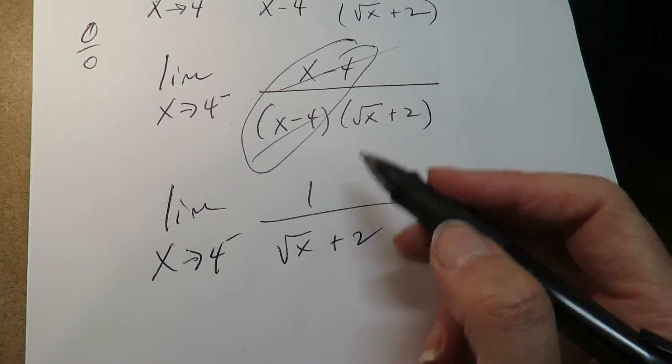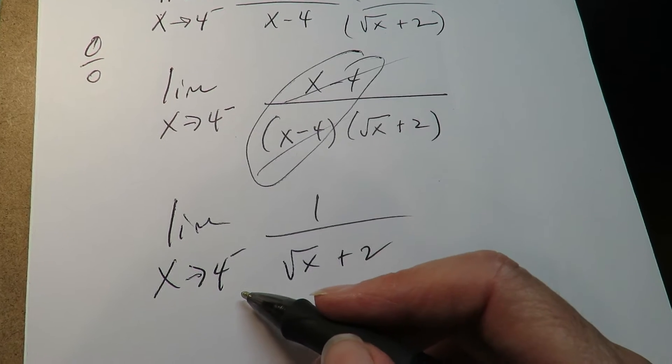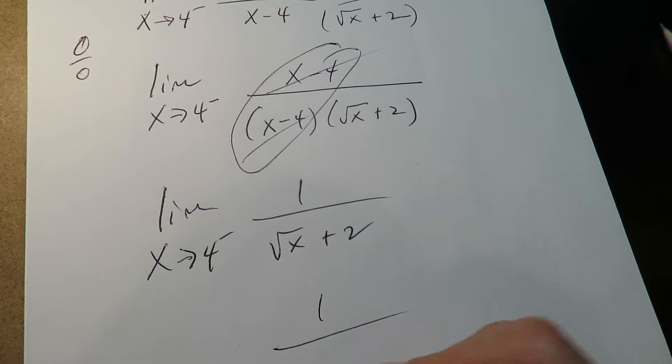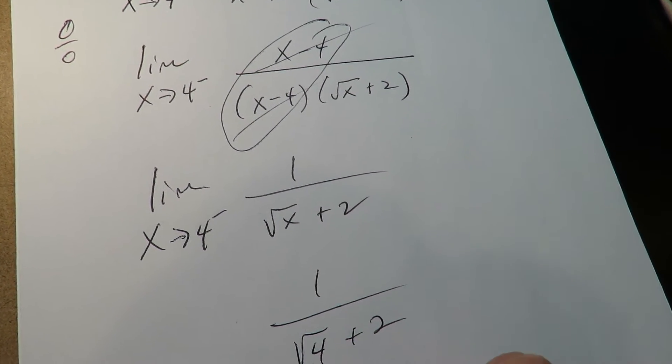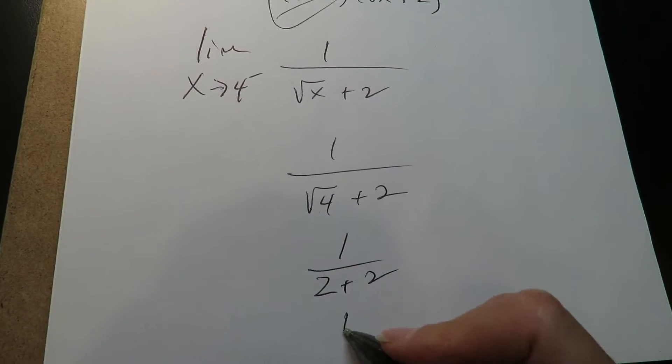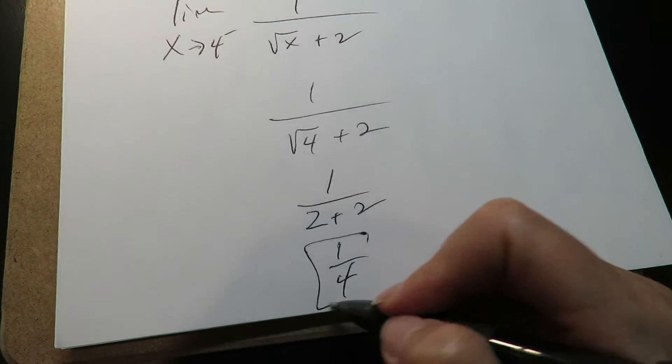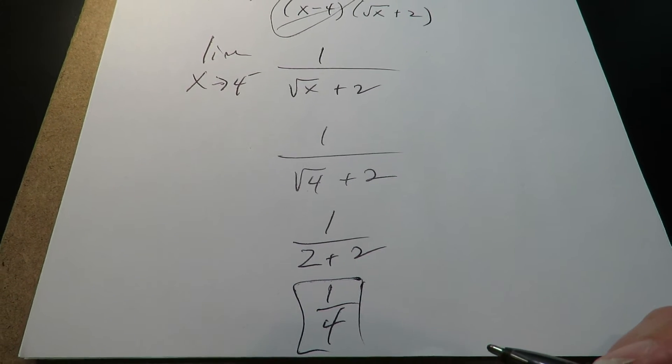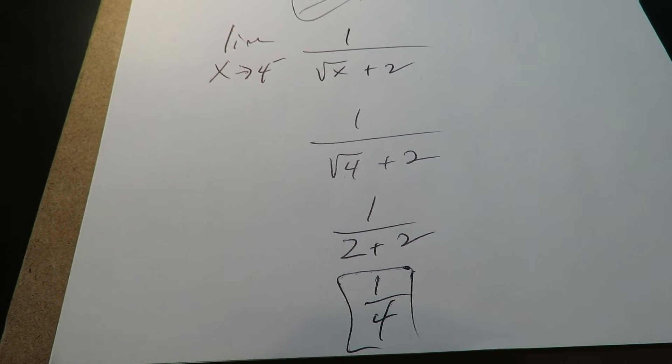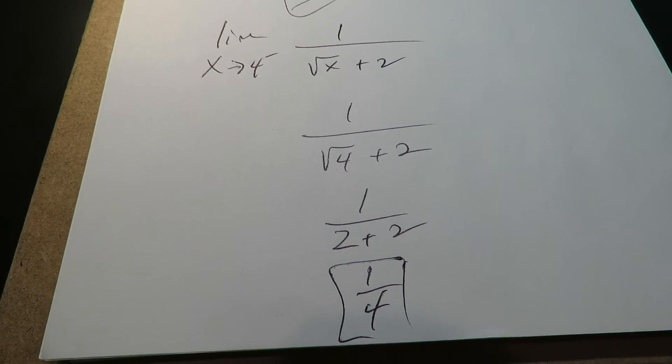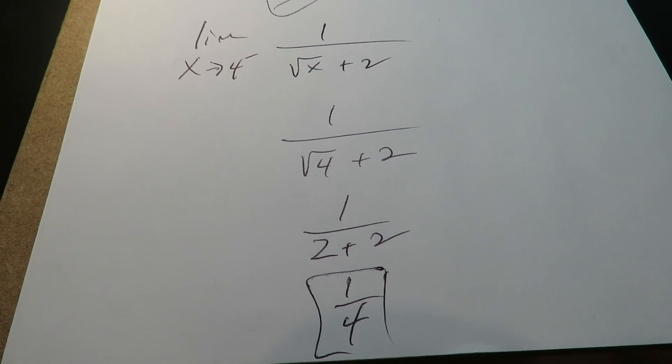Once that common factor reduces out, you go back and you plug in again. So now if I plug in the 4, I can actually solve the limit now. So the answer is 1 fourth. Hope this helped.